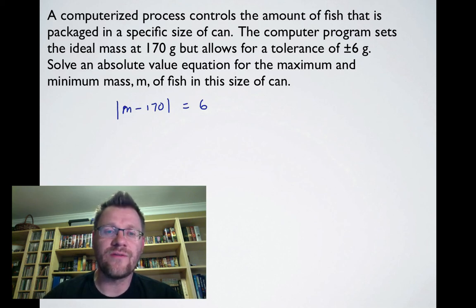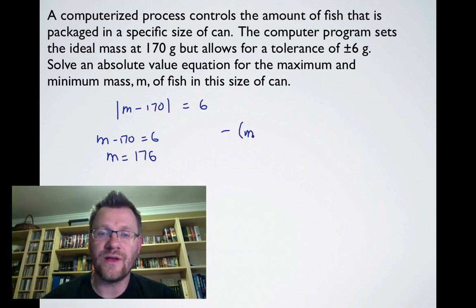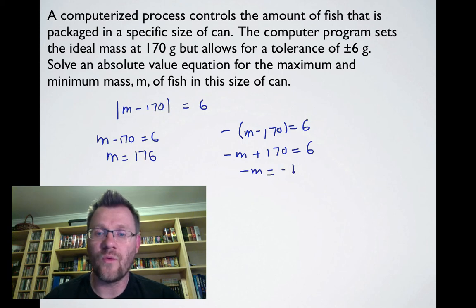This gives two equations. First: m - 170 = 6, so m = 176. Second: -(m - 170) = 6, which gives -m + 170 = 6, so -m = -164, or m = 164.